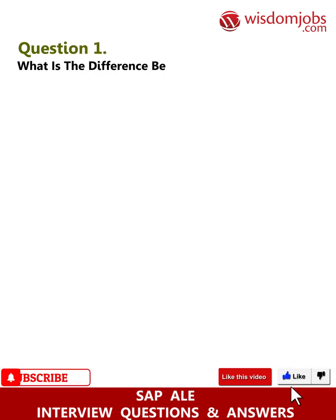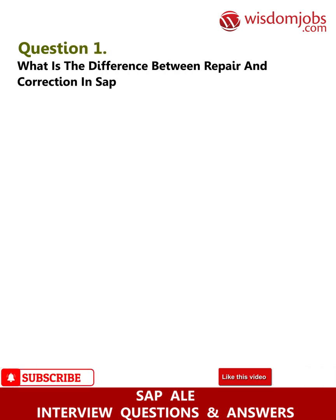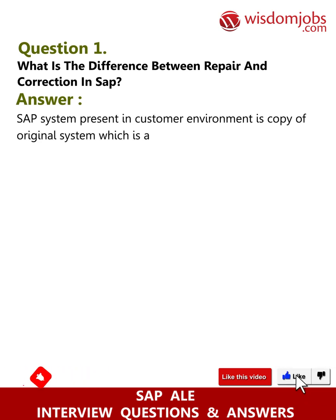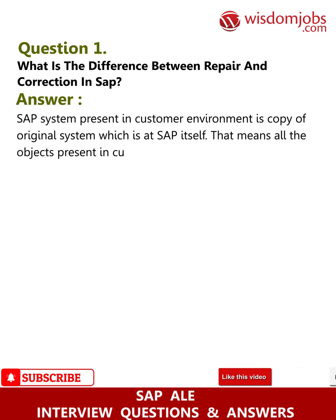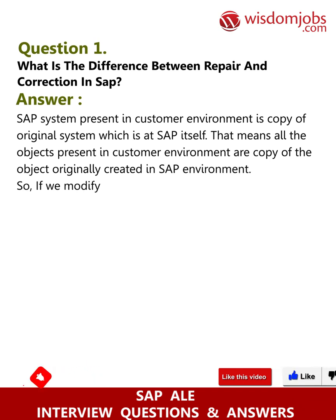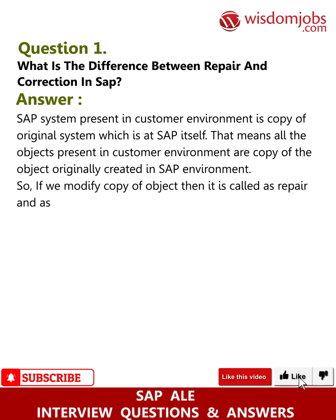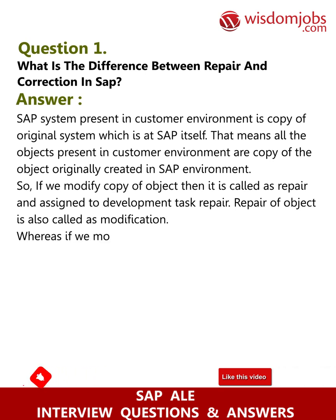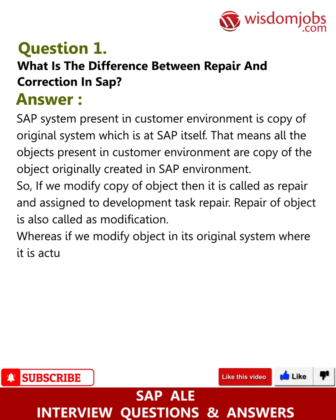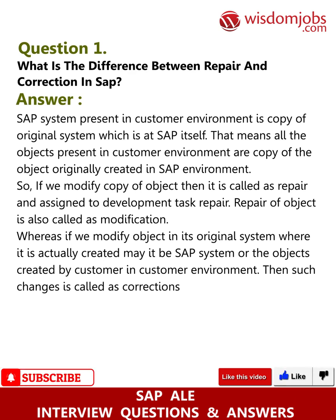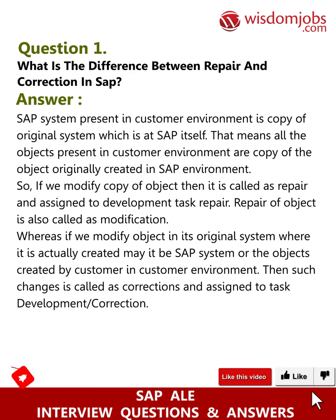Question 1: What is the difference between repair and correction in SAP? The SAP system present in a customer environment is a copy of the original system at SAP. If we modify the copy of an object, it is called a repair and assigned to a development task. Repair is also called modification. If we modify an object in its original system, such changes are called corrections and assigned to a development/correction task.